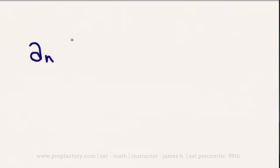Some of the more difficult sequence questions might ask you for the nth term. They might give you the first three terms and ask for the 24th term, for instance. You could use your calculator to repeat the operation, but there's actually a formula that makes it much easier: the nth term, a(n), equals a(1) — the first term in the sequence — times r to the power of n minus 1, where n is the term number you're looking for and r is the common multiplier.